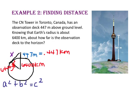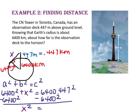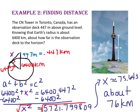Since we have a right triangle and we know the length of two sides — one leg and the hypotenuse — let's use the Pythagorean theorem. We'll use the radius as a, X as b, and the hypotenuse 6,400.447 as c. To get x squared alone, we'll subtract 6,400 squared from both sides. So x squared equals 5,721.799809. Remember, you have to square both numbers before you can subtract them. Taking the square root of both sides, x equals approximately 75.643. So the observation deck is about 76 kilometers from the horizon.